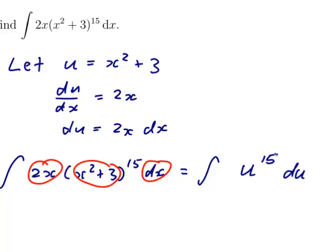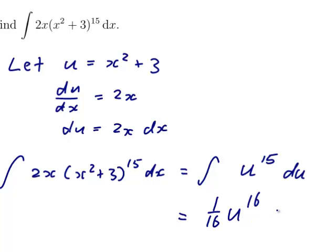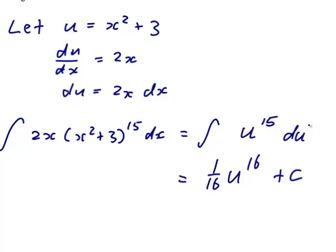Alright, and I can do that integral. So power up by 1 will give me 16, divide by the new power will be 1 over 16, and it's an indefinite integral so I'll go plus c. And u is actually x squared plus 3, so 1 over 16 times x squared plus 3 to the 16 plus c.